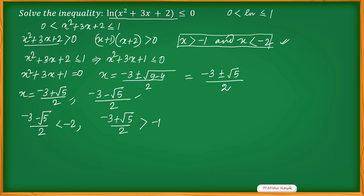So now we can write the interval. The answer is: ((-3 - √5) / 2, -2), which is an open interval because it is less than -2, union with (-1, (-3 + √5) / 2), where -1 is not included.